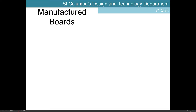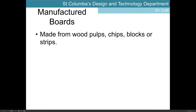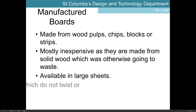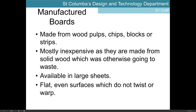Finally, we have manufactured boards, which come not from trees but from the pulps, chips, blocks, or stripped waste material of natural timbers. They're generally inexpensive because they're made from material that would otherwise go to waste. In large workshops, scrap material that isn't used is collected, recycled, and repurposed as manufactured boards, which lowers the price and is good for the environment. They're available in large sheets — much larger than we could ever get from a tree — and can produce flat, even surfaces which don't twist or warp.